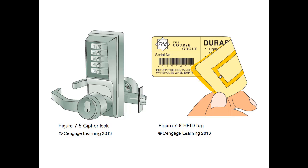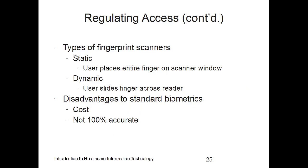Another way to regulate access is biometrics — using a person's unique physical characteristics to authenticate who they are, such as a retinal scanner or a fingerprint scanner. In this image we have examples of a cipher lock and an RFID tag. Fingerprint scanners are either static, where the user places their entire finger on the scanner window, or dynamic, where the person slides their finger across the reader like on a smartphone. Disadvantages of biometrics include high cost and the fact that it is not 100% accurate.